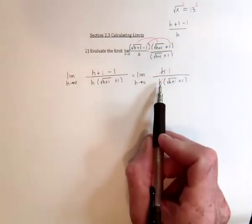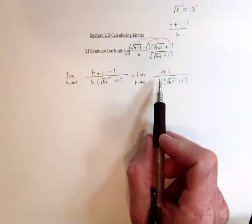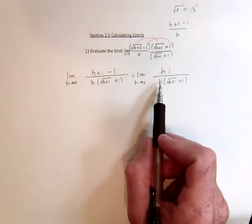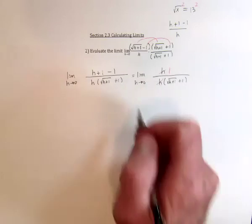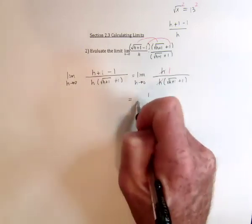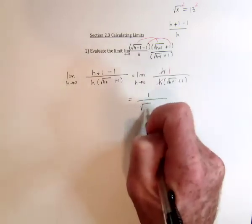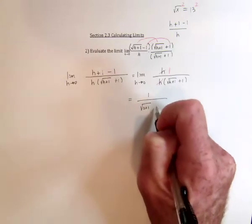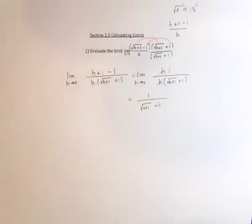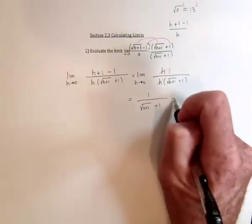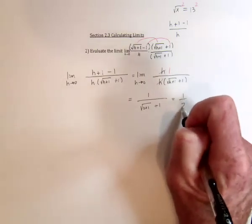And now that the problem has been eliminated that was causing the division by zero, try substituting zero again. So we're going to get a 1 for the numerator and a square root of 0 plus 1 and then plus 1, which is a grand total of 1 half.